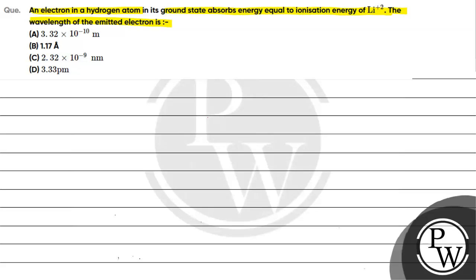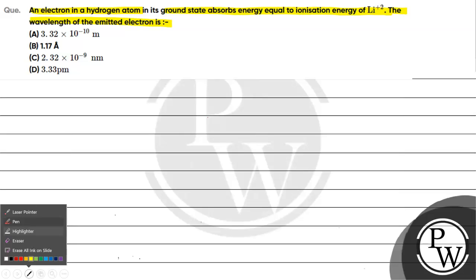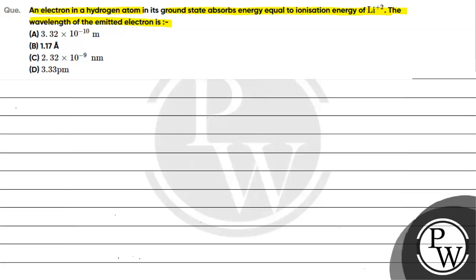Option B: 1.17 angstrom. Option C: 2.32 × 10⁻⁹ nanometers. Option D: 3.33 picometers. The key concept for this question is ionization energy.